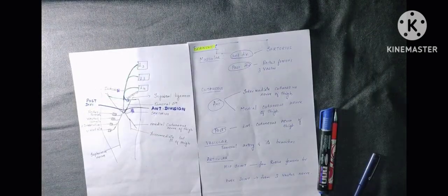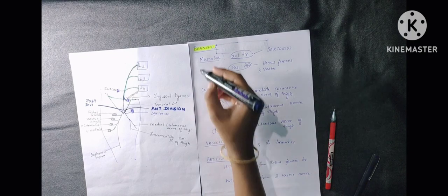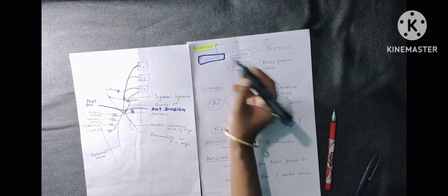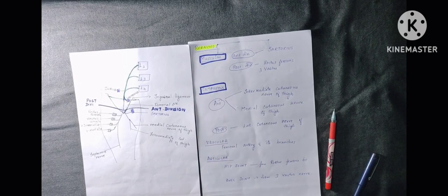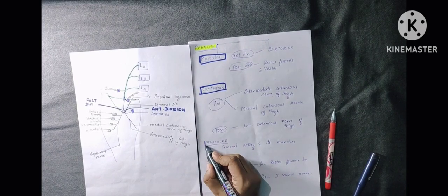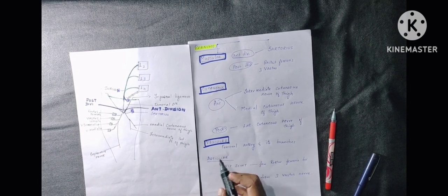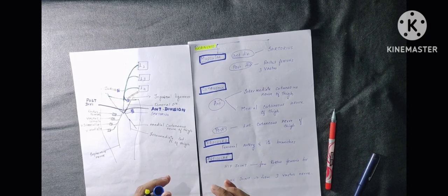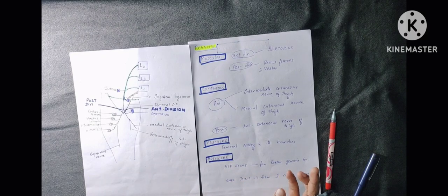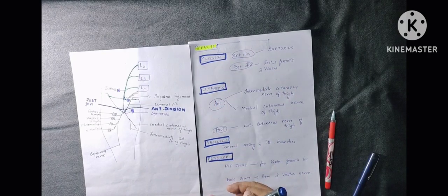Coming to the branches — there are four types of branches from the femoral nerve. One is muscular branches, which supply muscles. Two is cutaneous branches, which provide skin sensation from the anterior division. Three is vascular branches, which supply blood vessels. Four is articular branches, which supply joints — specifically the hip joint and knee joint.